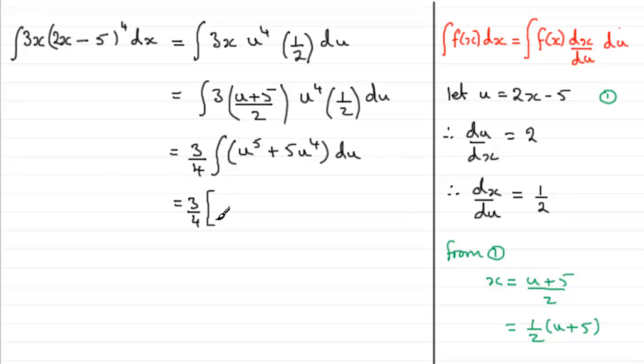Integrating u to the power 5, remember just add 1 to the power and divide by the new power. So that's u to the power 6 over 6. The same applies with this one. We get 5u to the power 5 over 5. And then, don't forget the constant of integration plus c.